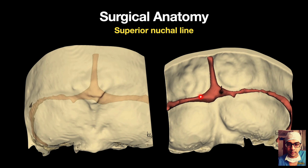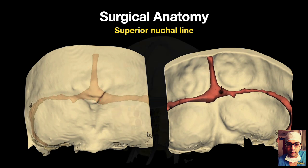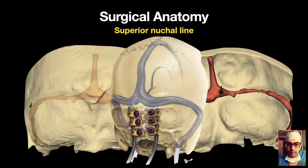You can see the transverse sinus and the confluence of sinuses corresponding to the superior nuchal line and the external occipital protuberance. Your instrumentation has to stay below these vascular structures so that you don't injure them with your screws.